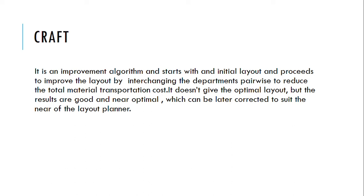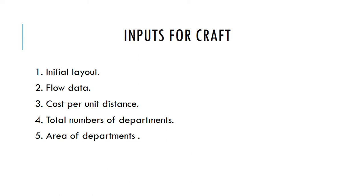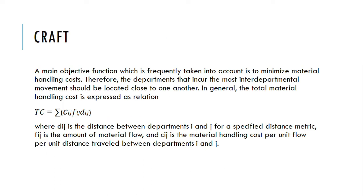CRAFT doesn't give the optimal layout but the results are good and near optimal, which can be later corrected to suit the layout planners. Five inputs are required for the CRAFT algorithm: initial layout, flow data, cost per unit distance, total number of departments, and area of the departments. The main objective function is to minimize material handling cost, so departments with the most interdepartmental movement should be located close to one another.